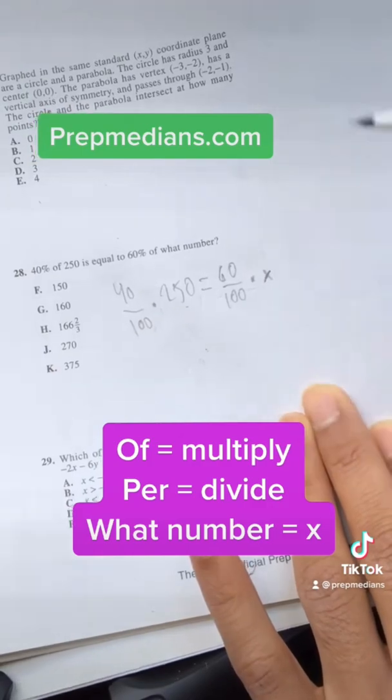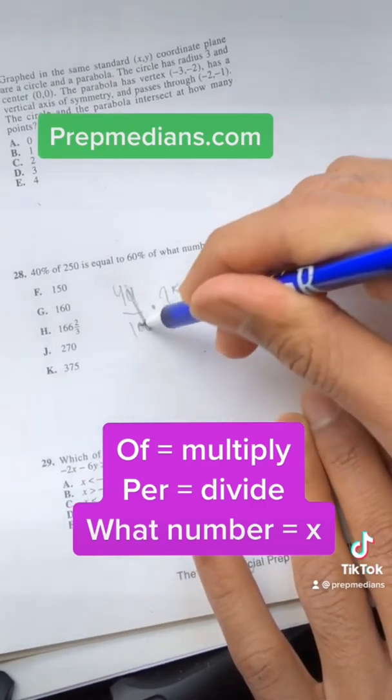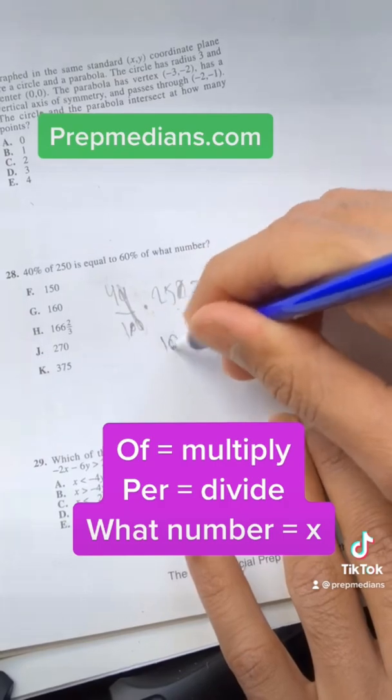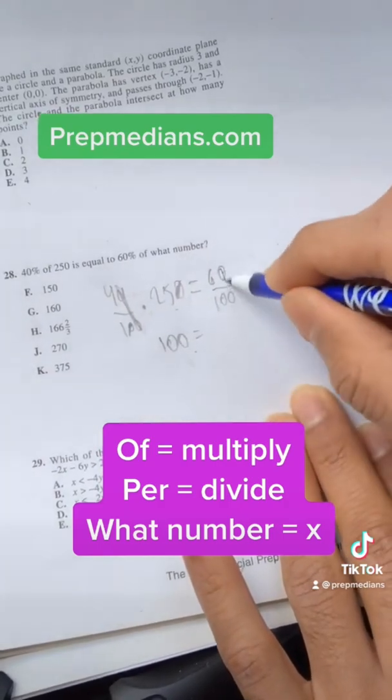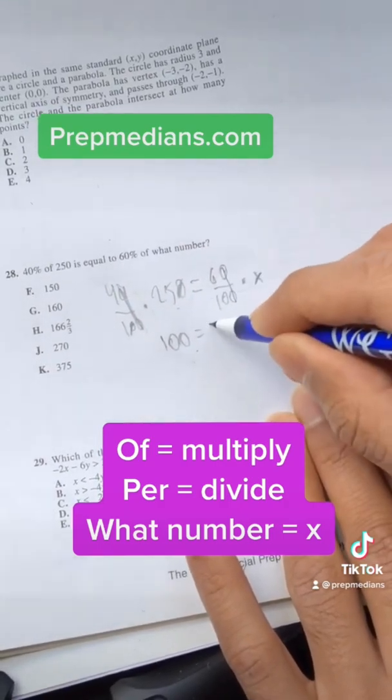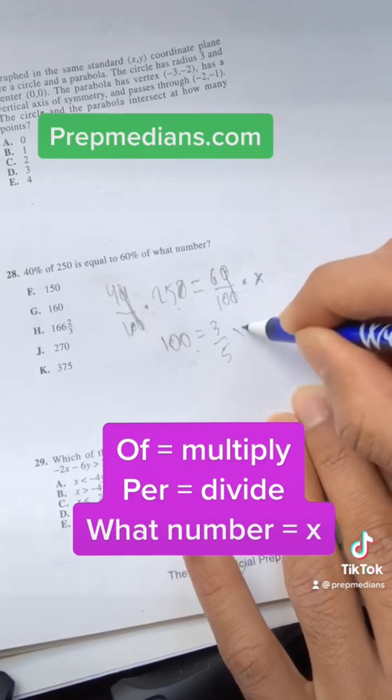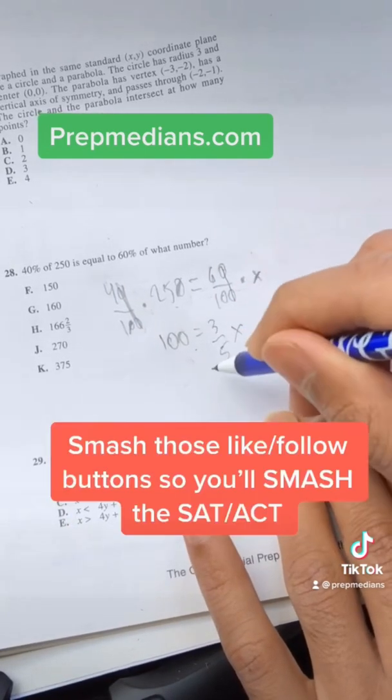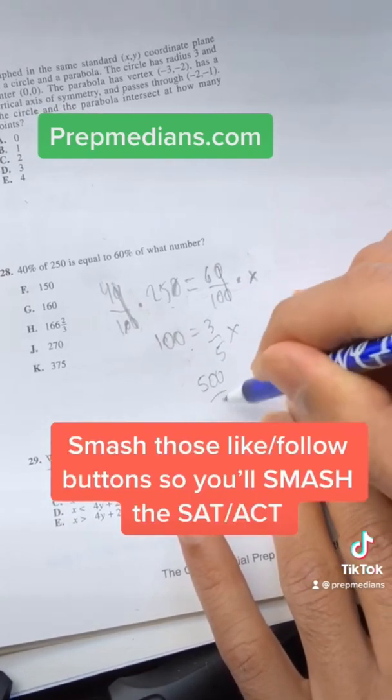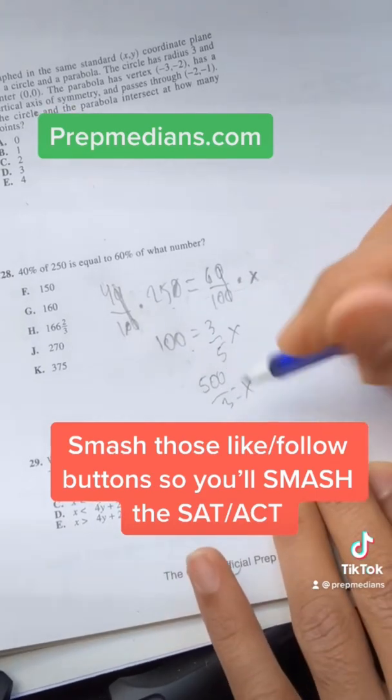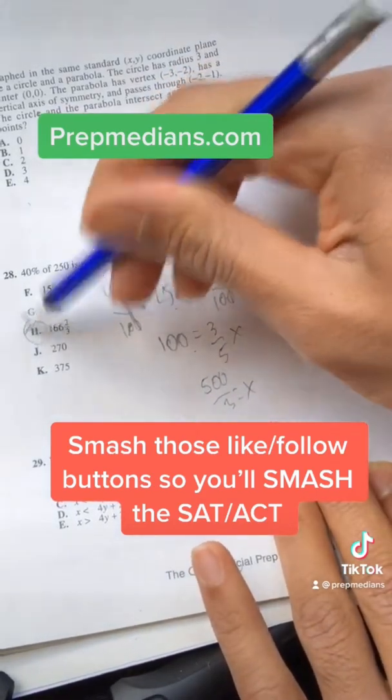So I go ahead and I simplify. Let's cross out these zeros. Let's cross out these zeros. Well, that's 100. Equals, and I cross out these zeros. 6 divided by 10. I can simplify that to 3 over 5X. And then I go ahead, cross multiply this part. I get 500 over 3 equals X. What's 500 divided by 3? Well, it's none other than answer H. Boom.